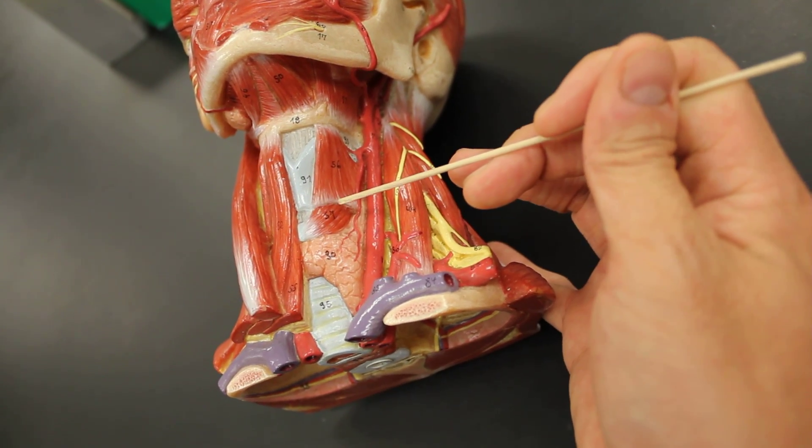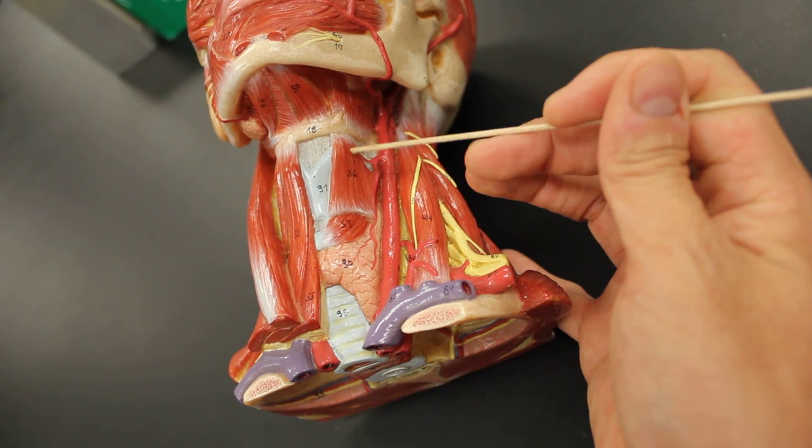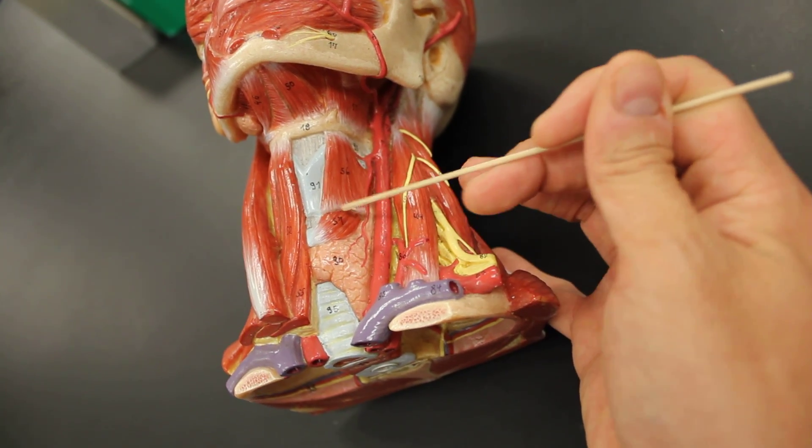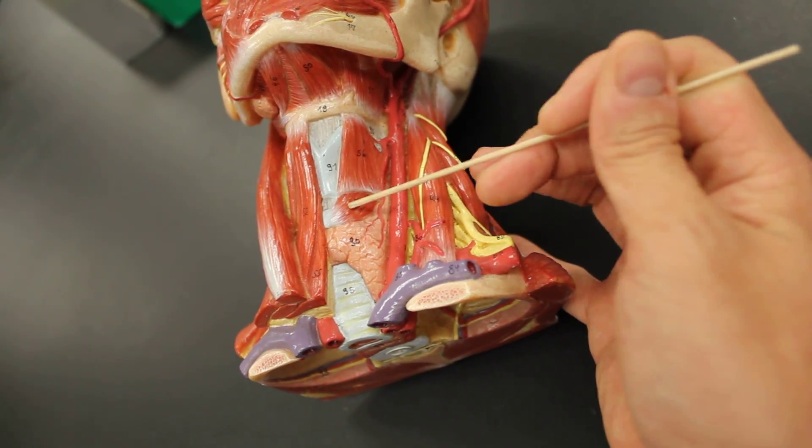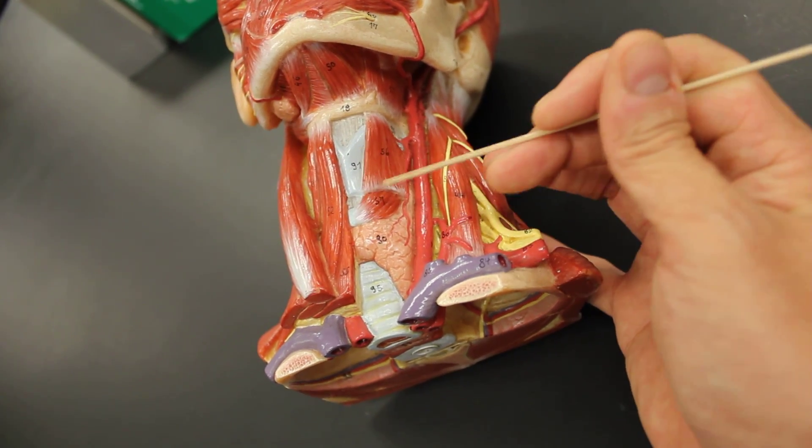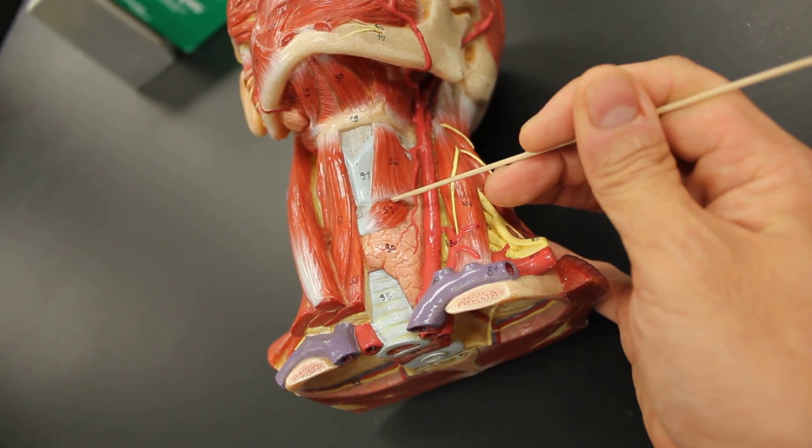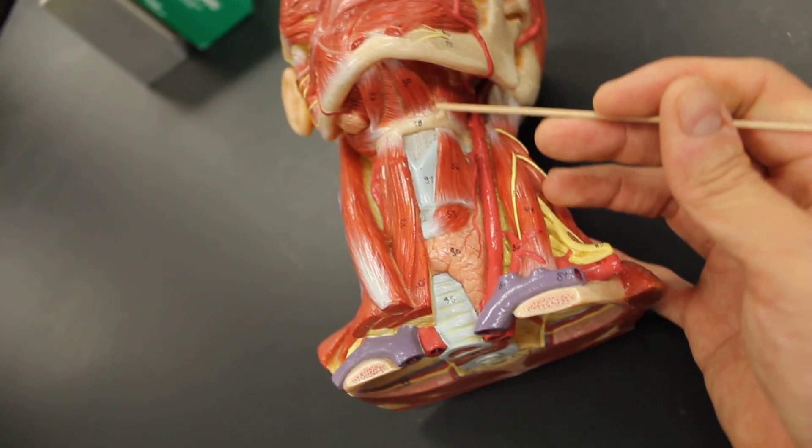The last muscle is this guy which, since this is the thyroid cartilage, we call the thyrohyoid. Yes, we have the cricothyroid, but don't worry about that. This is the thyrohyoid. So four muscles I want you to know.